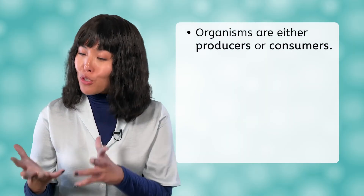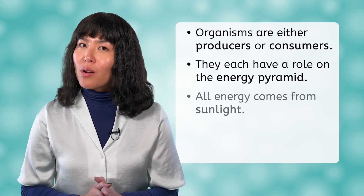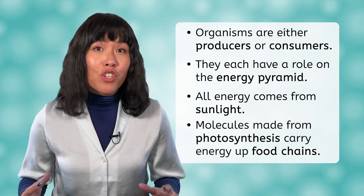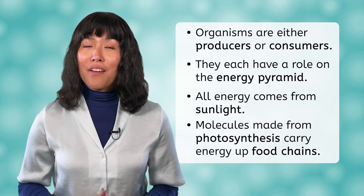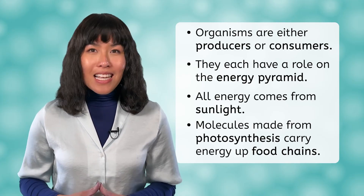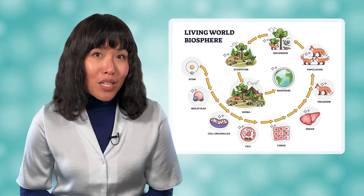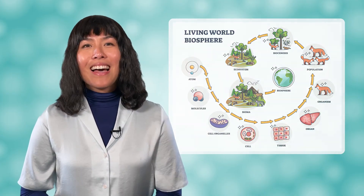As we went through the lesson today, we learned that organisms are classified as either producers or consumers, and that each has a role to play in the energy pyramid. But remember, energy all starts with the sun and photosynthesis. The molecules made there carry energy up the food chains to primary, secondary, and even tertiary consumers. In the lesson PDF, you'll practice creating a food web and classify various organisms into the appropriate trophic levels. Next time, we'll look at the way ecosystems are structured and define several levels of ecological organization. Until then, remember that biology isn't just science — it's the way of life. I'll see you next time.